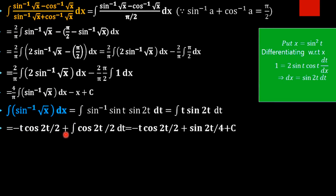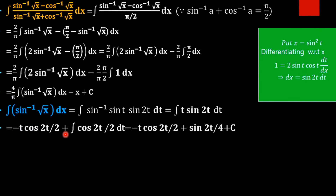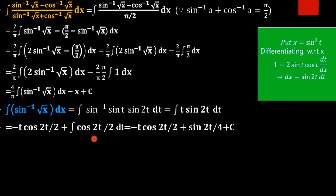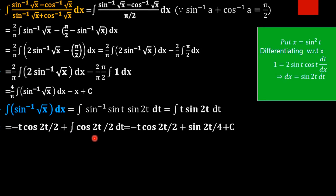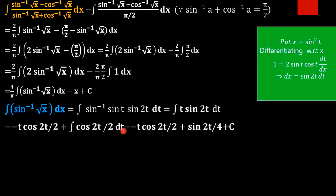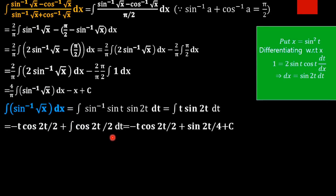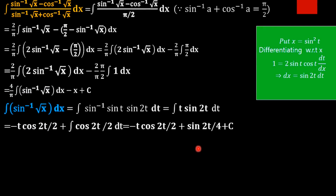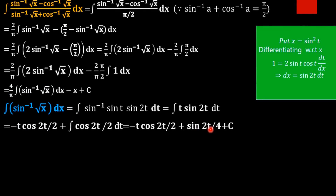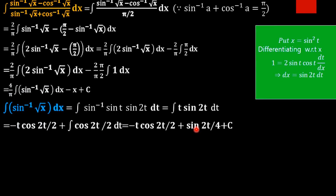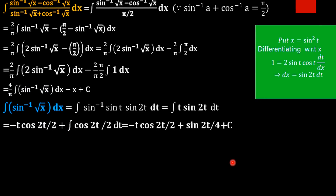The minus and minus become plus. Continuing, the integral of cos 2t by 2 is sin 2t by 4. So the result of the integration by parts is minus t cos 2t by 2 plus sin 2t by 4 plus c. This gives us the value of the integral of sin inverse of root x in terms of t.